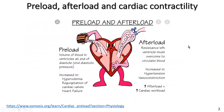Just before we get onto the Frank-Starling law itself, this is a nice graphic of preload and afterload and their effects on cardiac contractility and therefore heart performance. So preload, which is the topic of this video, examples would be the volume of blood in the ventricles at the end of diastole, increasing in hypervolemia — a medical term for increased fluid load across the whole body, but also in particular to the circulating blood volume.